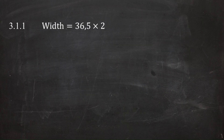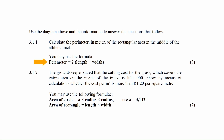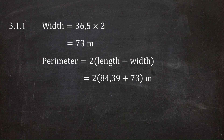The width of the track equals 36.5 meters multiplied by 2, giving a width of 73 meters. Substituting the length of 84.39 meters and the width of 73 meters into the perimeter formula gives a perimeter of 314.78 meters.